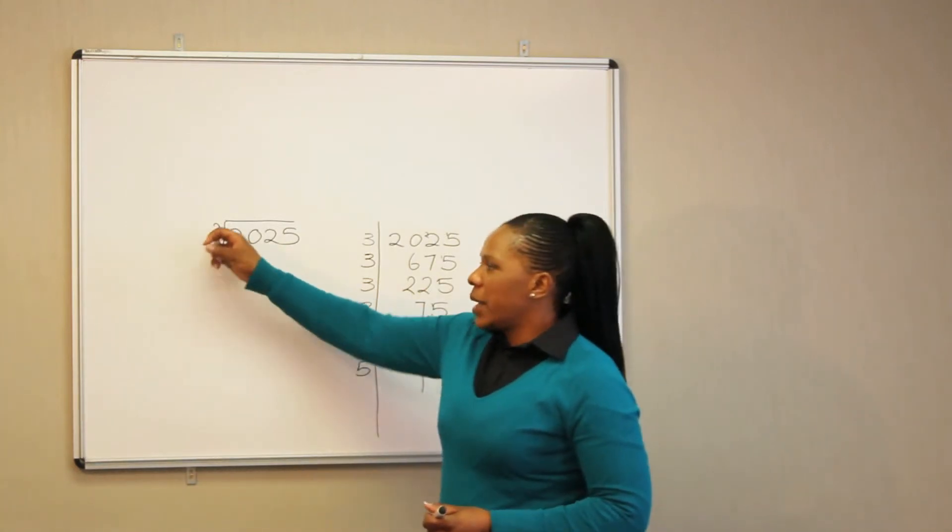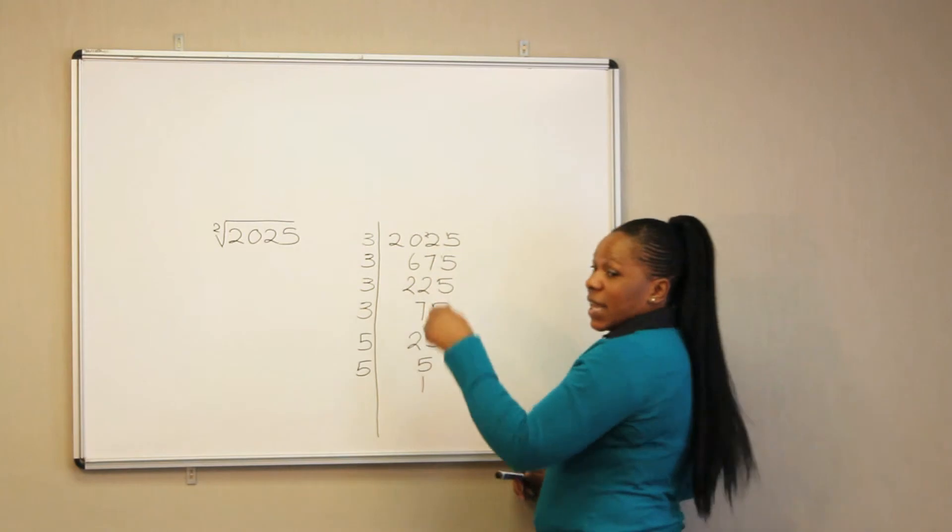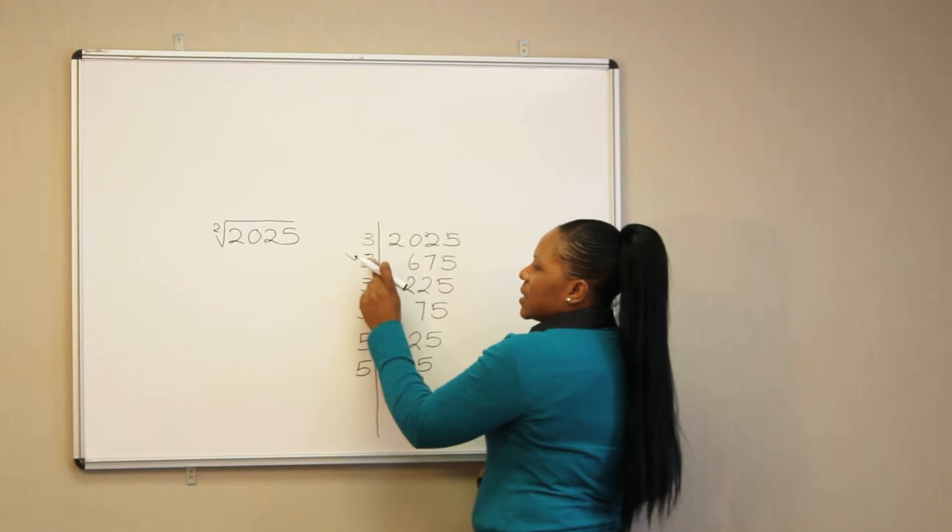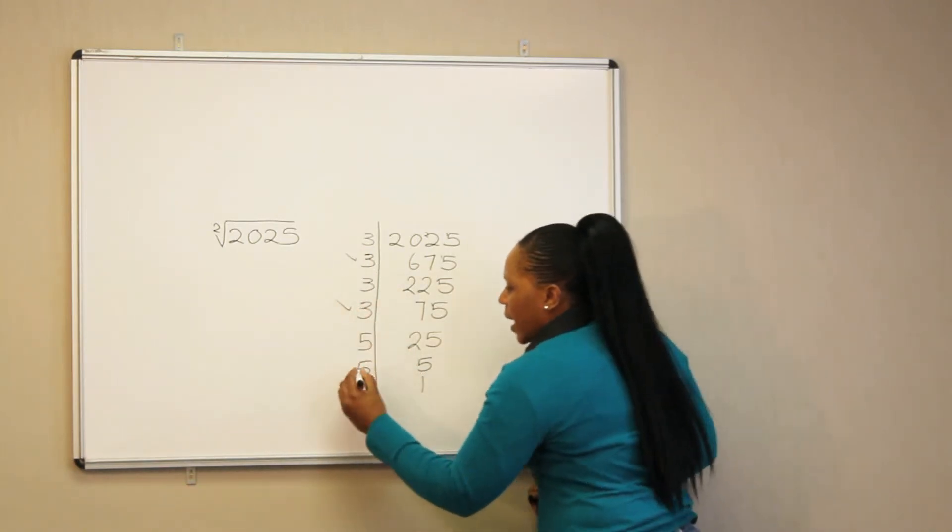Since we are looking for the square root, we are going to use every second factor that we have. In this case, we are going to take this 3 as the second factor, that 3 as the other factor, and the 5.